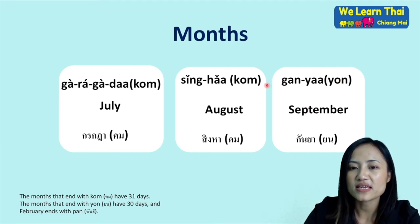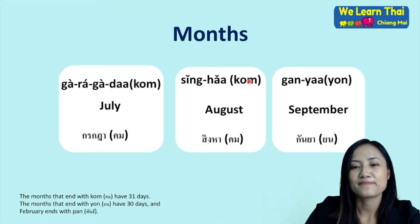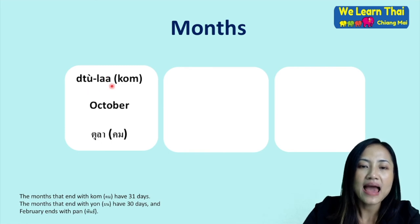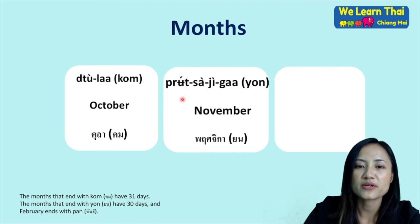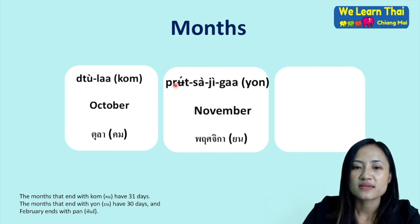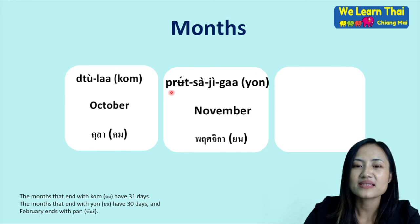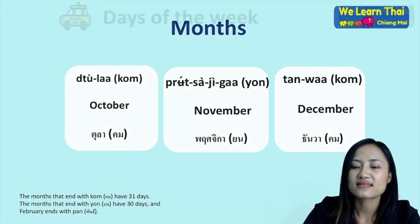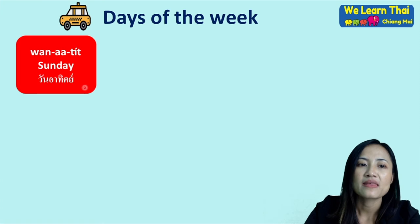You can see the words in parentheses — you can drop them for shorter forms. Continuing: October — ตุลาคม (or ตุลา); November — พฤศจิกายน; December — ธันวาคม.